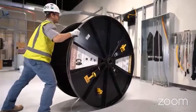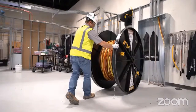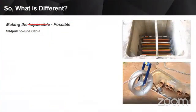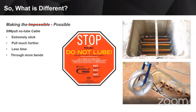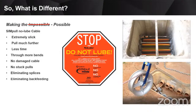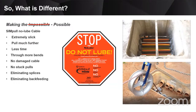By beginning with the plan and developing the pull calculations, it's going to allow you to get these reels combined into one reel instead of many, set up the pull point, and make these pulls in one continuous pull. What's different today that makes wire pulls that used to be impossible now possible? The answer is Southwire's simple no-lube cable. The low coefficient of friction means it's extremely slick, allowing us to pull wire and cable much further than before, in less time, through more bends, without damaging the cable, without getting it stuck, and eliminating costly labor-intensive splicing and back feeding. Instead of using the pull box as a 90, the box can be installed in a straight-through fashion, allowing us to pull in one continuous pull.